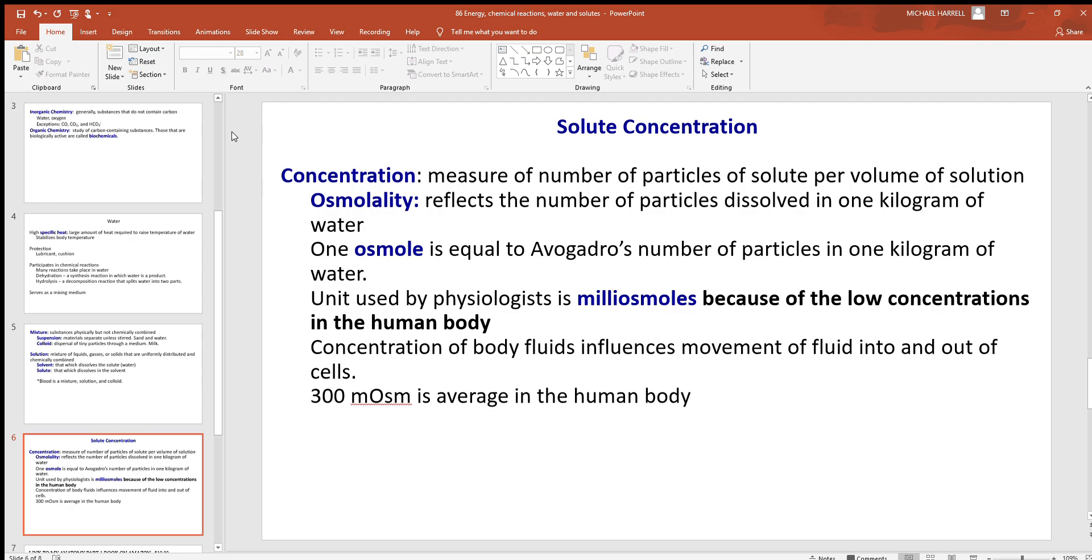Now looking at solute concentrations throughout the body, we've mentioned terms like moles and osmoles before in other examples and other PowerPoints. So here we have osmolality. It reflects the number of particles dissolved in one kilogram of water. One osmol is equal to one Avogadro's number. We saw that before. That number of particles in the kilogram of water. And a lot of these things in the waters of the cells and other parts of the body are often found in small amounts. So often instead of using the term osmoles throughout the book, we'll see milliosmoles being used because of the low concentrations in the human body. Concentration of body fluids influences movement of fluid into and out of cells. 300 milliosmoles is average in the human body. And when you look at almost all tissues of the body and the solute concentrations in those tissues, it's usually around 300 milliosmoles. Consider that the solute concentration unless you're told otherwise.